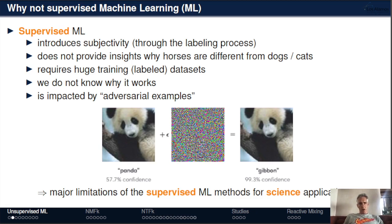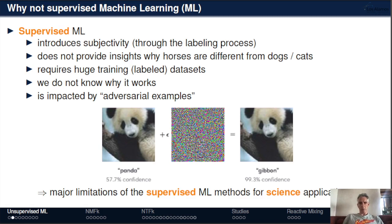Furthermore, why not use supervised machine learning methods? First, we introduce subjectivity through the labeling process. It also does not give us much insight into why different animals look differently. It requires big training datasets, we often don't know why it works, and supervised machine learning is impacted by adversarial examples — where adding random noise indistinguishable to the human eye can cause an image of a panda to be classified as a totally different animal. This is a major limitation for science applications because errors can substantially change the outcome.